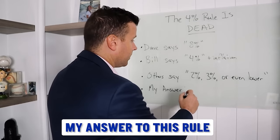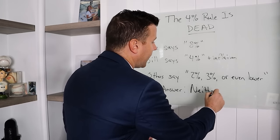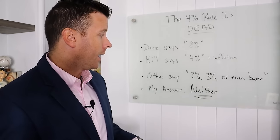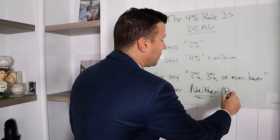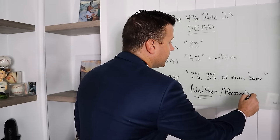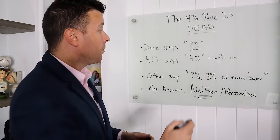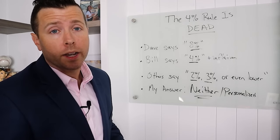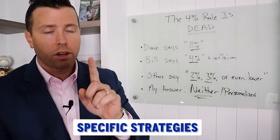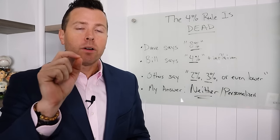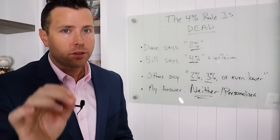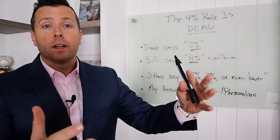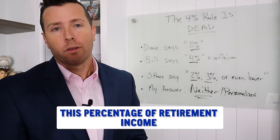My answer to this rule, it's neither. It's nobody. Nobody has the perfect answer on your retirement income withdrawal. I believe it's very personalized. So I would say it's a personalized answer. Some of you, it could be 8%. Some of you, it's going to be 4%. Some of you, it's going to be 2%, 3%. We don't know yet.